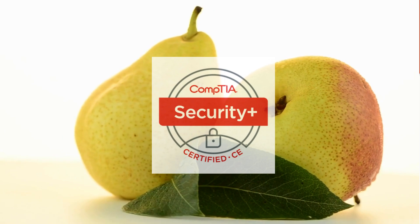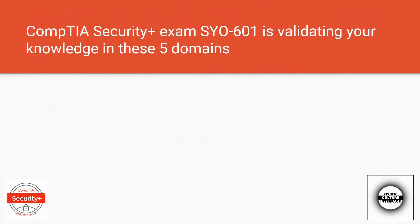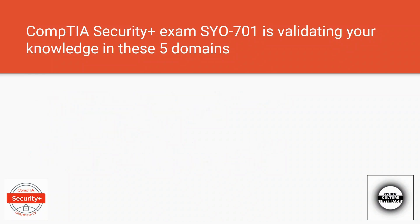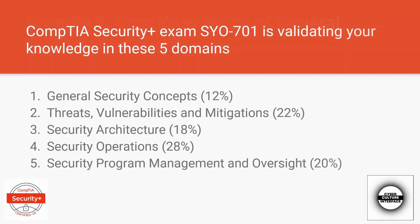There are two versions of Security+. One of the versions is going to expire in July 2024 — that is version SY0-601. This 601 will no longer be available after July 2024, and from August, SY0-701 will be the only one available. In subsequent videos we are going to drill down more into each domain in detail, but for this video we're just going to have an overview of what each domain covers.